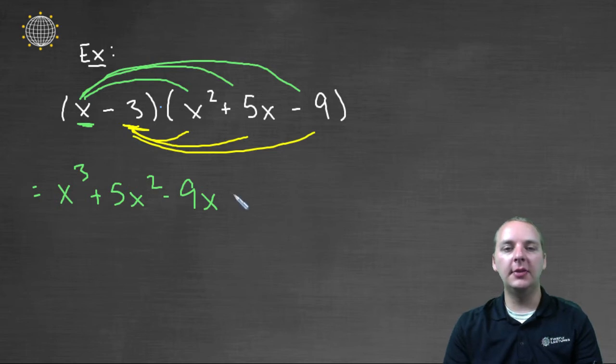Negative three times x squared would make minus three x squared. Negative three times five x would make minus fifteen x. And negative three times negative nine would make plus twenty-seven.